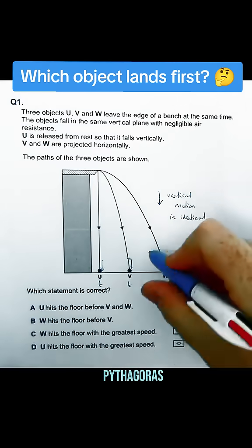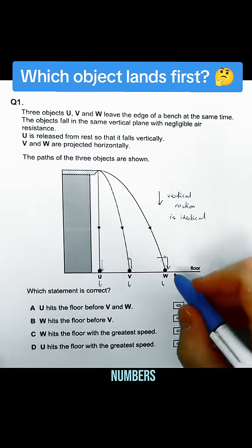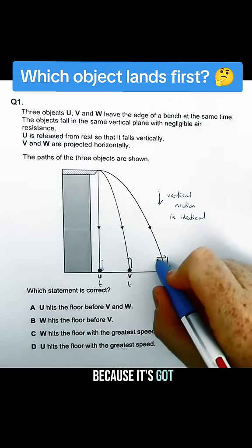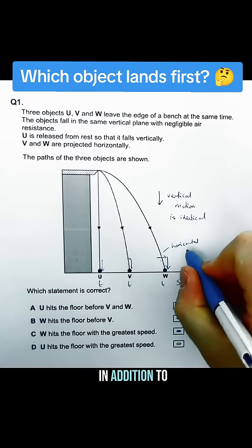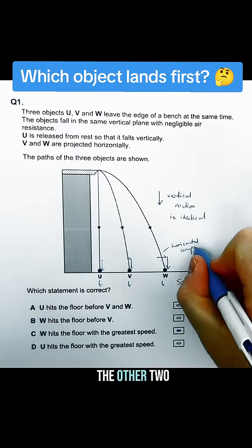So if we were to work out Pythagoras, which we can't do here because we don't have numbers, W is going to have the greatest speed because it's got a horizontal component to velocity in addition to its vertical component, as well as the other two.